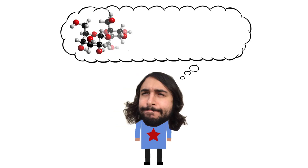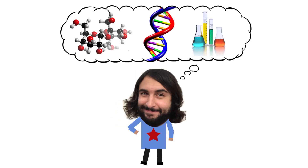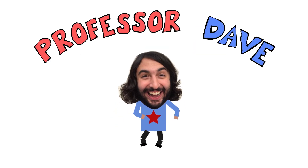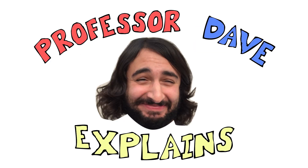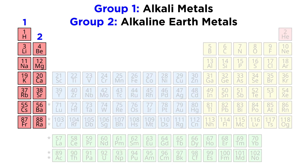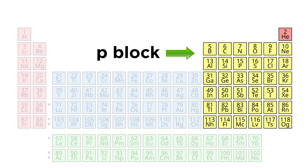Professor Dave explains. With groups one and two covered, we have completed the S block on the periodic table. Now it's time to hop over to the P block and continue learning about more of these elements.